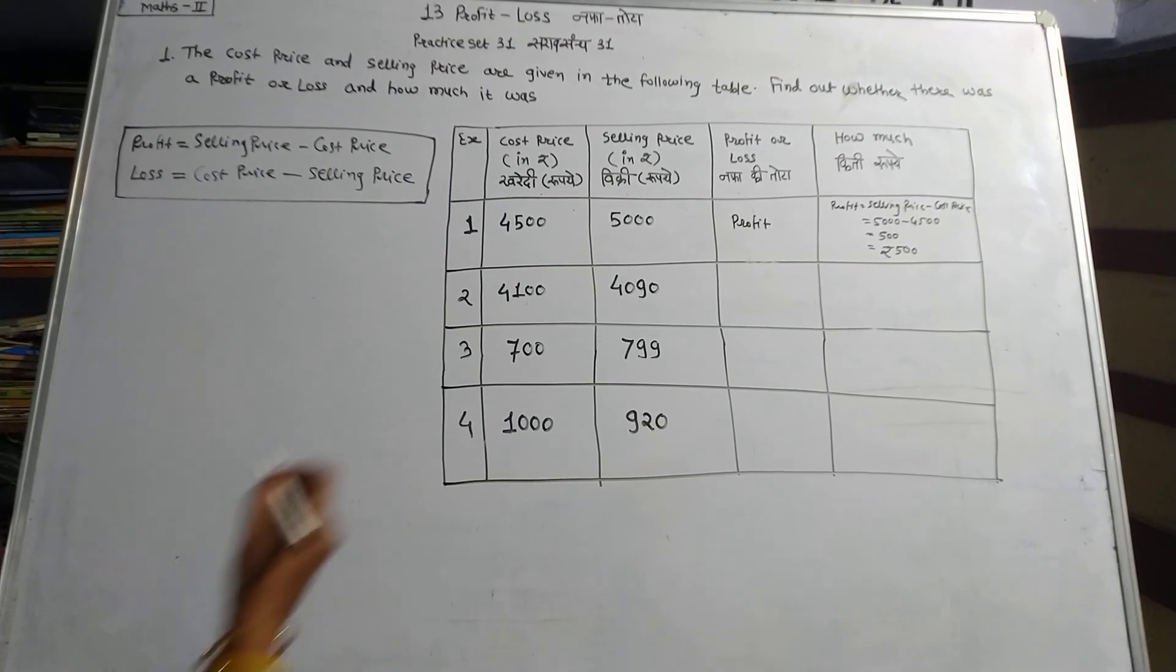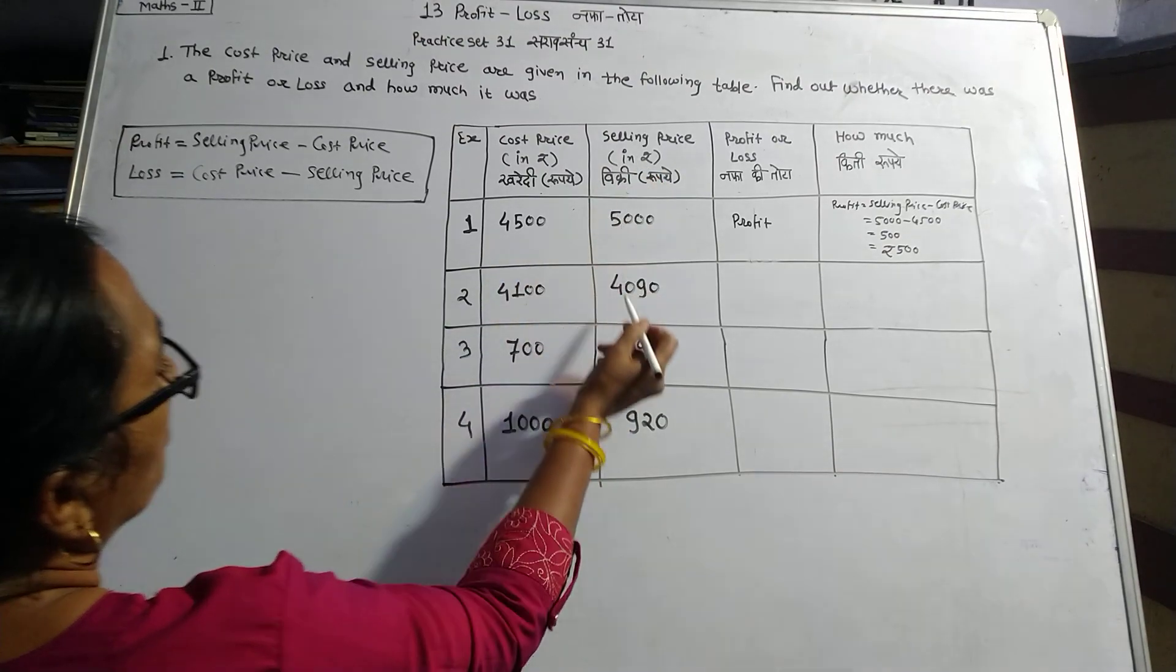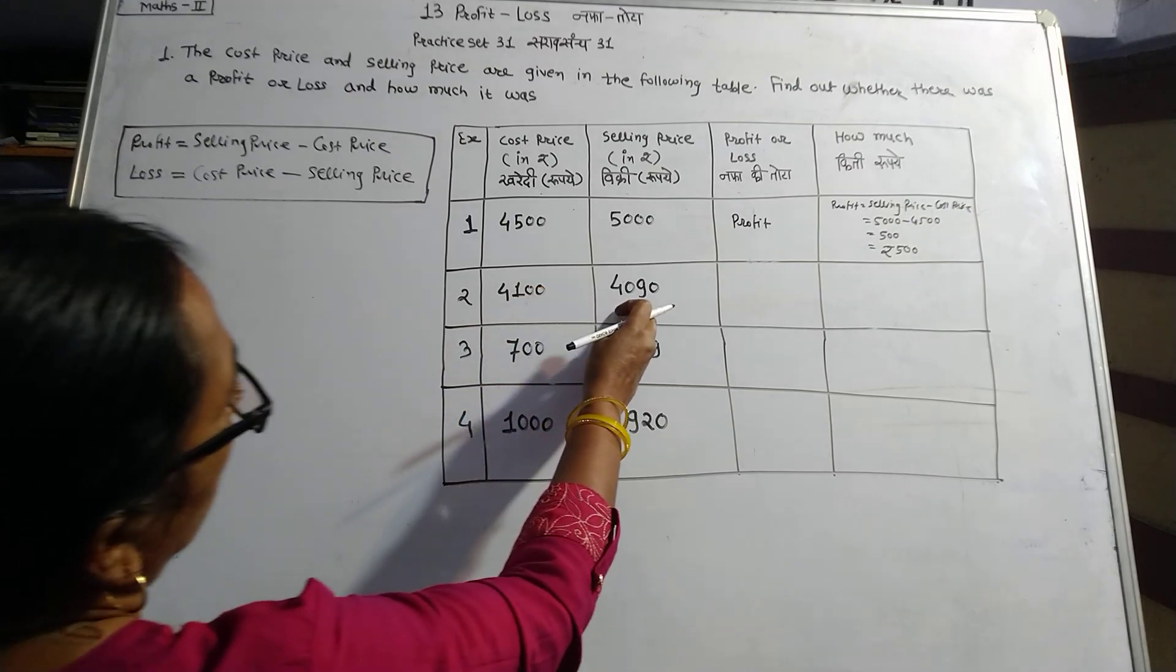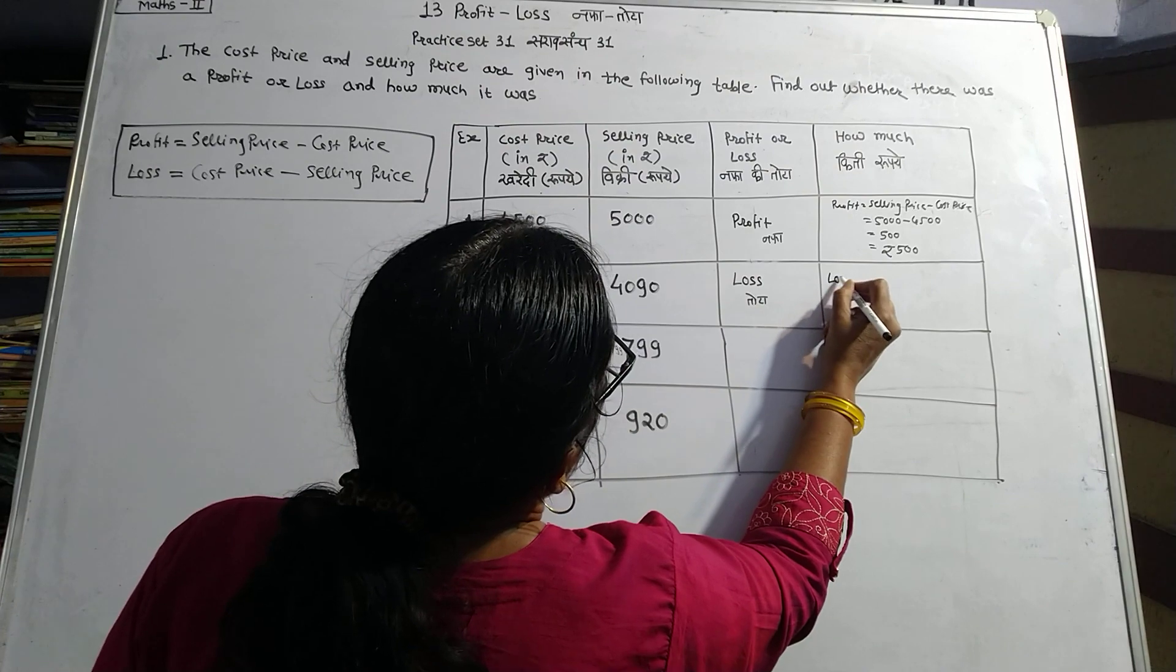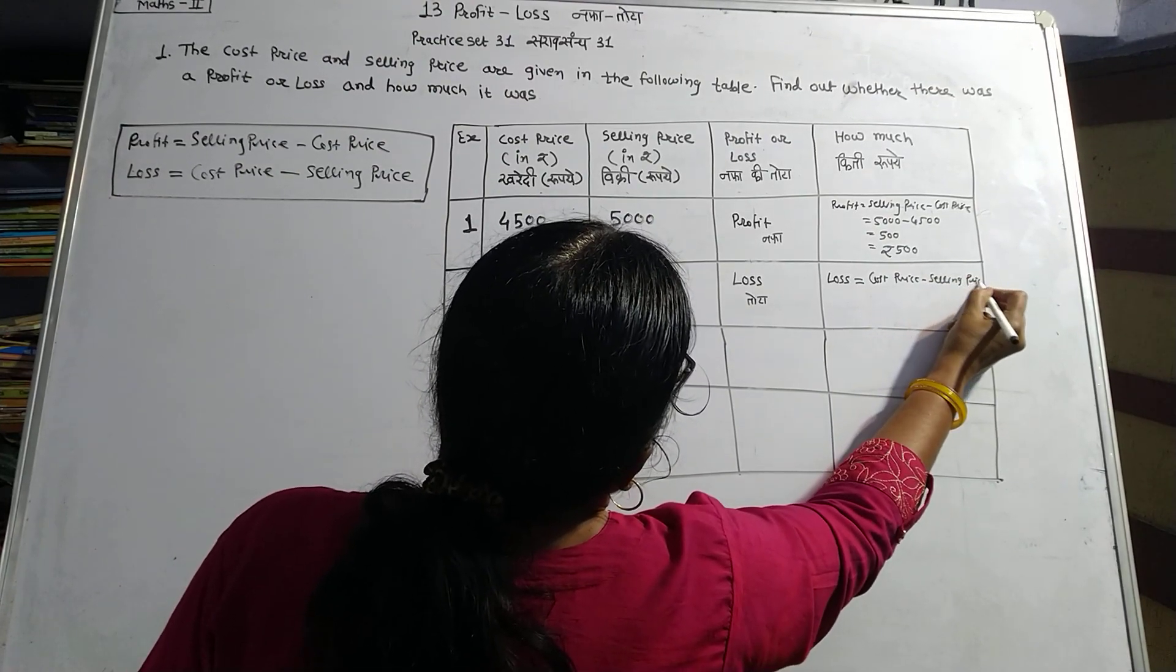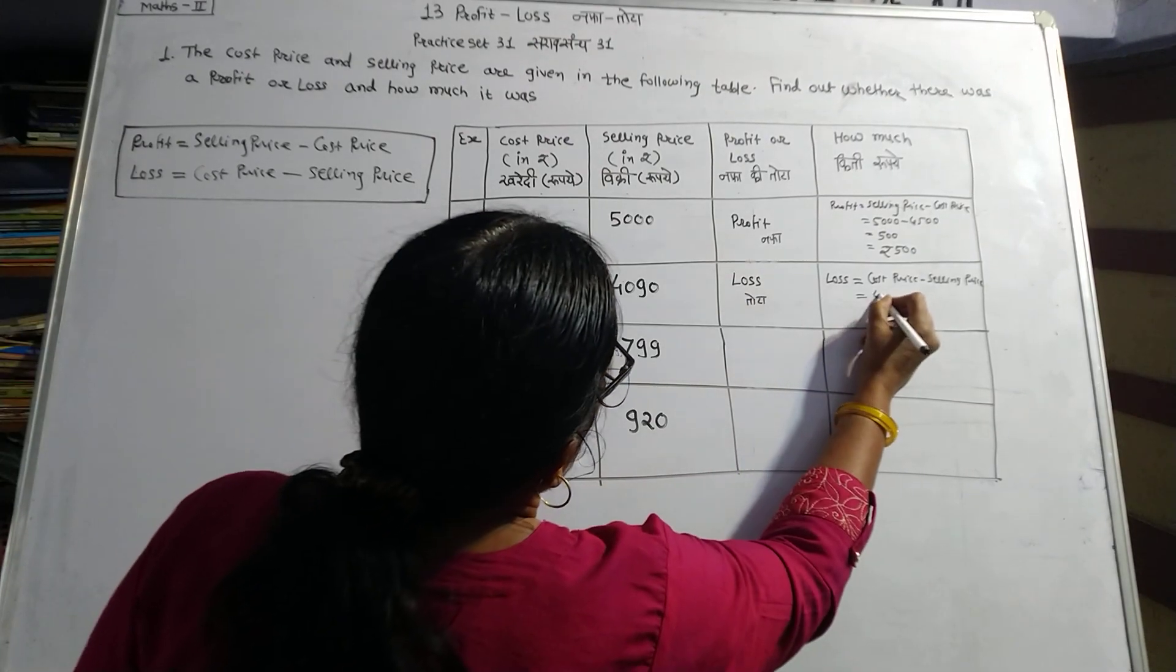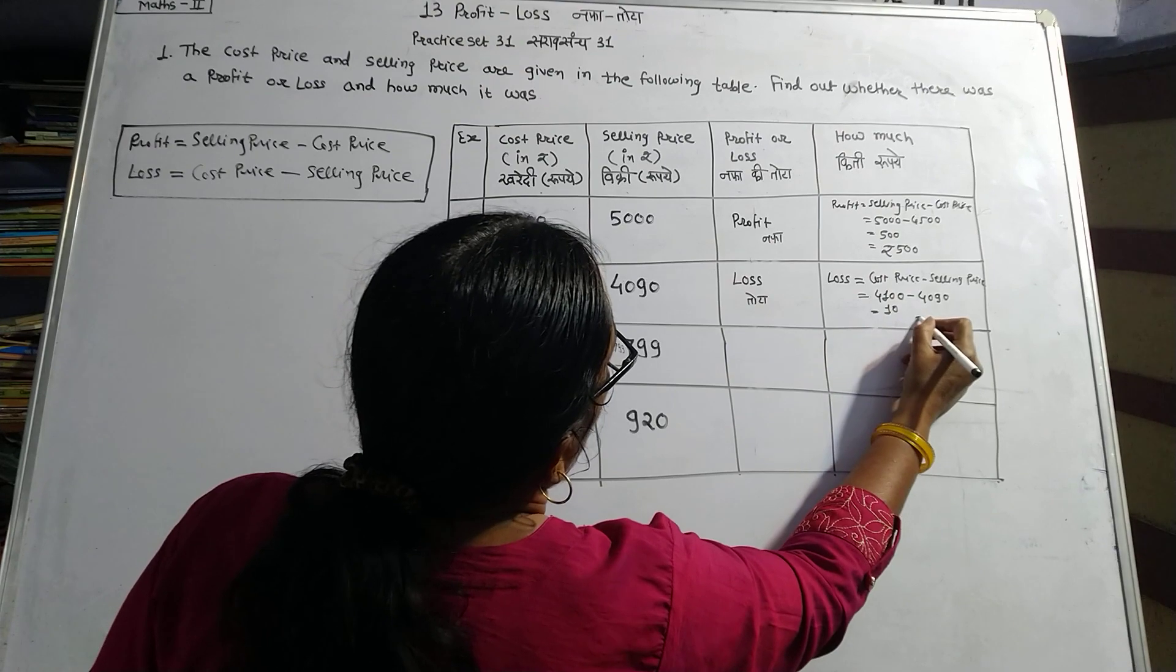In the second example, cost price equals 4,100 and selling price is 4,090. Here selling price is less than cost price, so there is loss. Loss equals cost price minus selling price, which is 4,100 minus 4,090 equals 90. Therefore the answer is rupees 90 loss.